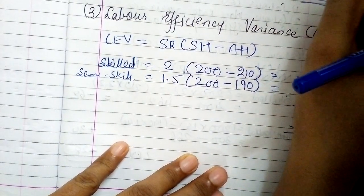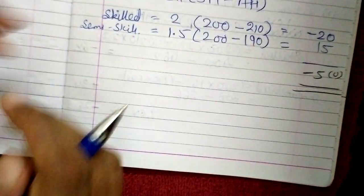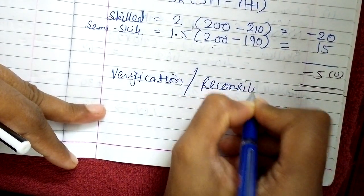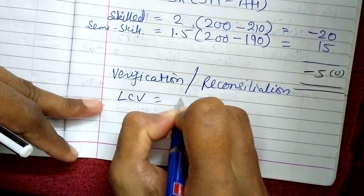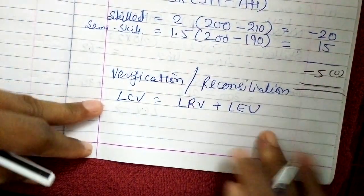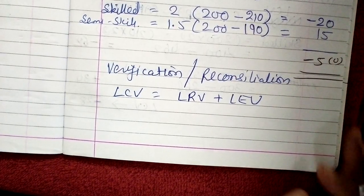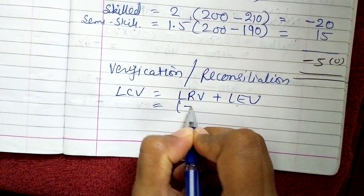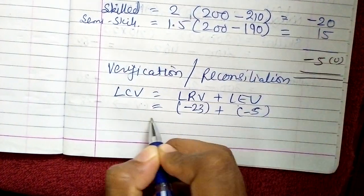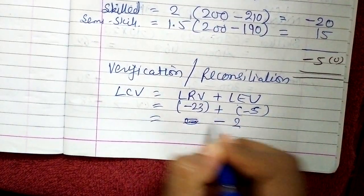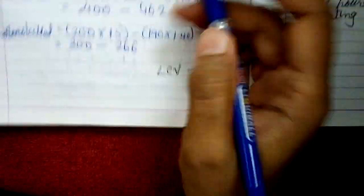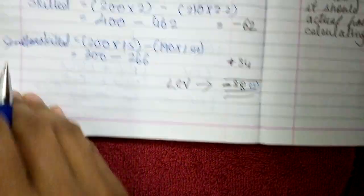So the final LEV answer is negative 20 plus 15 = negative 5, unfavorable. So we have LRV = 23 unfavorable, LEV = 5 unfavorable, and LCV = 28 unfavorable. We can verify: just as MCV equals MPV plus MUV, labor cost variance equals wage rate variance plus efficiency variance. So 23 plus 5 equals negative 28 — which matches our LCV. Calculation verified.